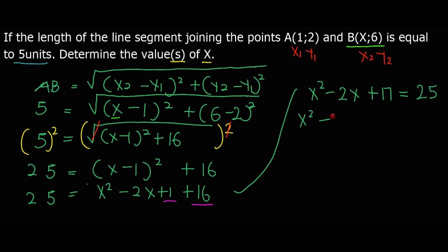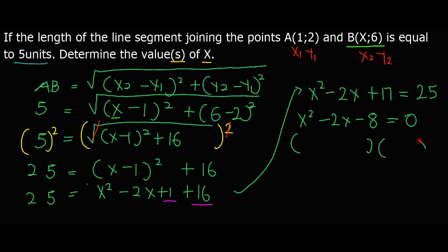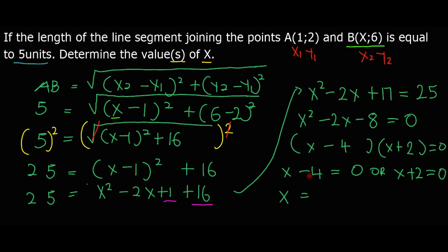So globally: x squared minus 2x plus 17 equals 25. Moving 25 to the other side and changing the sign gives x squared minus 2x plus 17 minus 25 equals 0, which simplifies to x squared minus 2x minus 8 equals 0. We then factorize: (x minus 4)(x plus 2) equals 0, giving x minus 4 equals 0 or x plus 2 equals 0. Therefore x equals 4 or x equals negative 2.